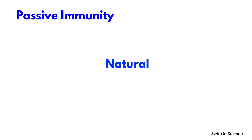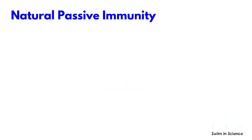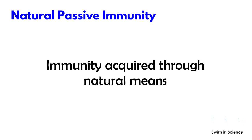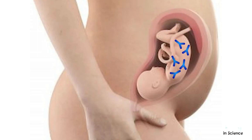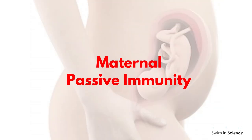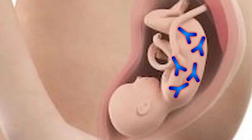Passive immunity can also be either natural or artificial. Natural passive immunity is the immunity acquired through natural means rather than medical intervention. This typically refers to the passage of antibodies from mother to baby across the placenta, which is also called maternal passive immunity. These antibodies can protect the infant from infections in the womb.